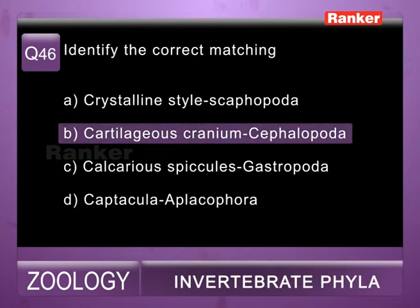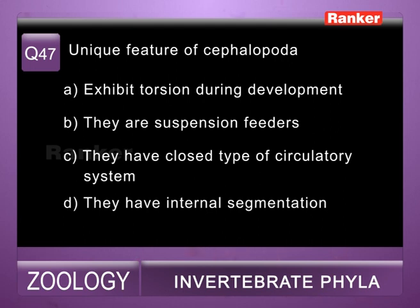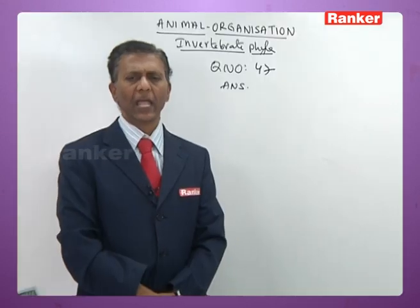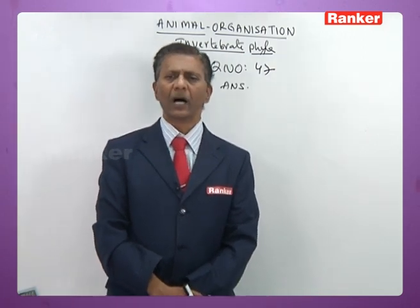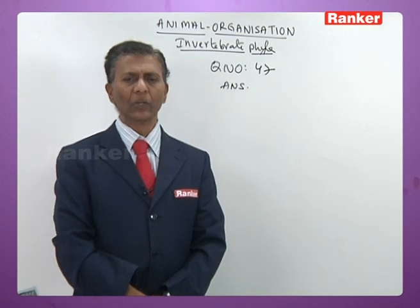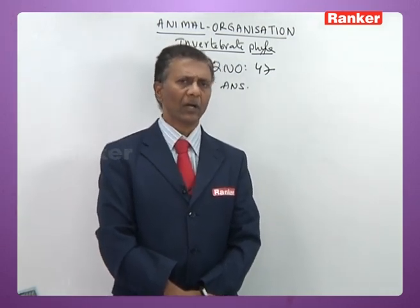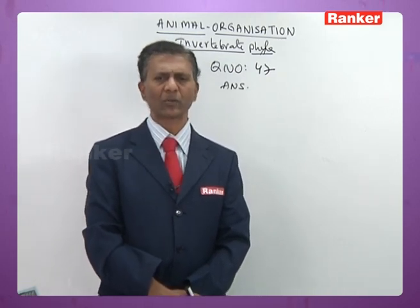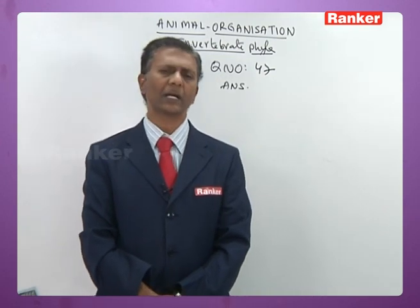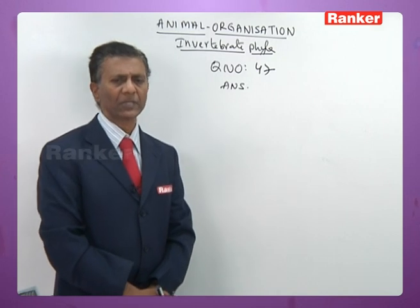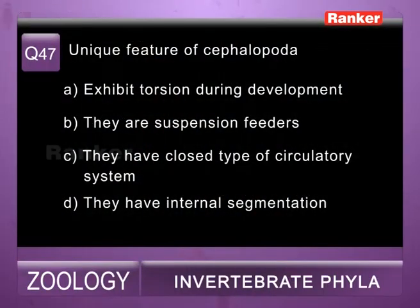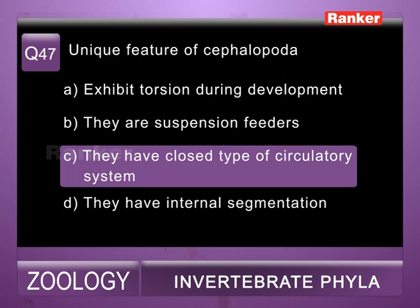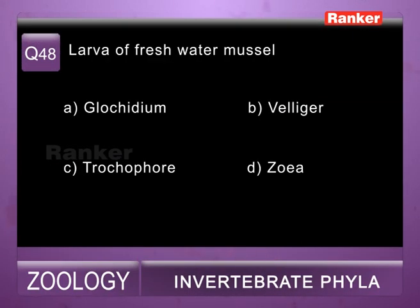Question forty-seven: unique character of cephalopods — a) exhibit torsion during development (wrong — torsion is seen in gastropods, not cephalopods), b) they are suspension feeders (wrong — suspension feeders are pelecypods), c) they have closed blood vascular system (correct — cephalopoda is the only group of Mollusca with closed blood vascular system), d) they have internals (wrong). So forty-seventh question correct answer is c.